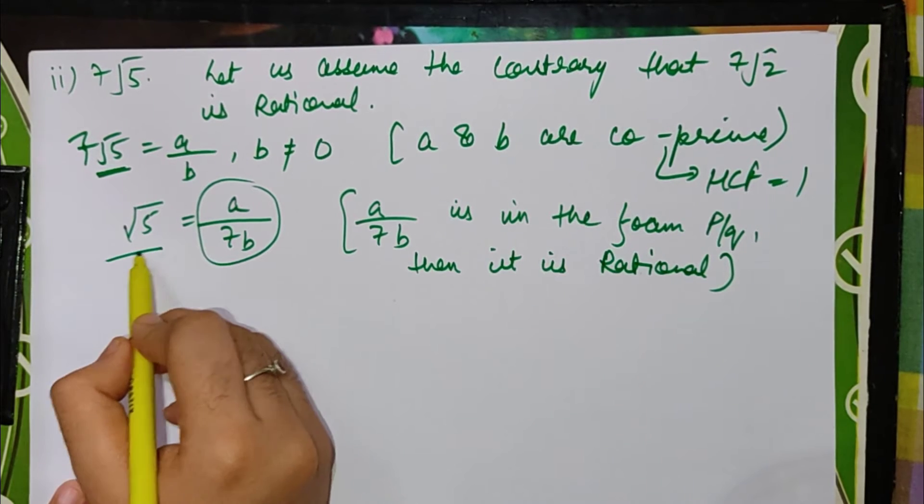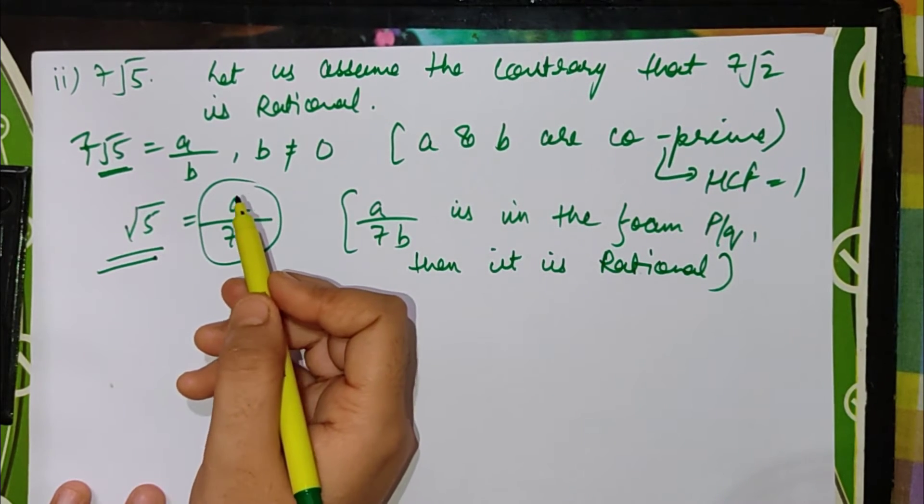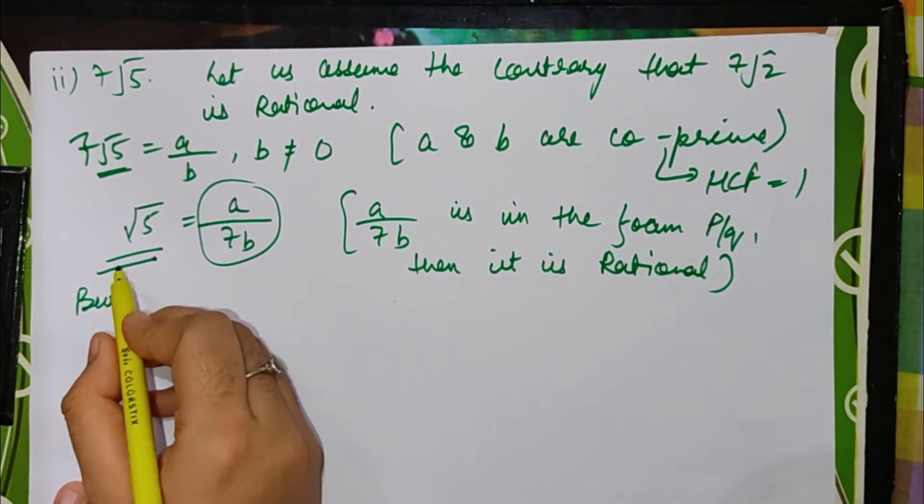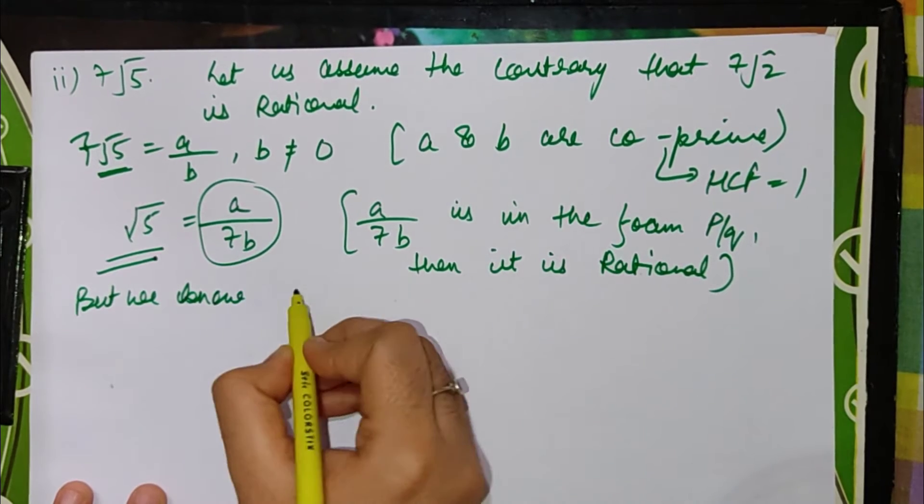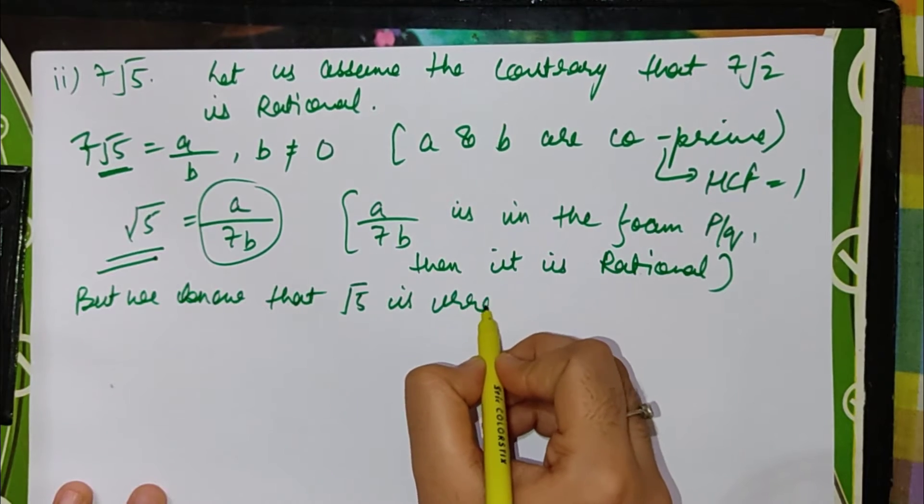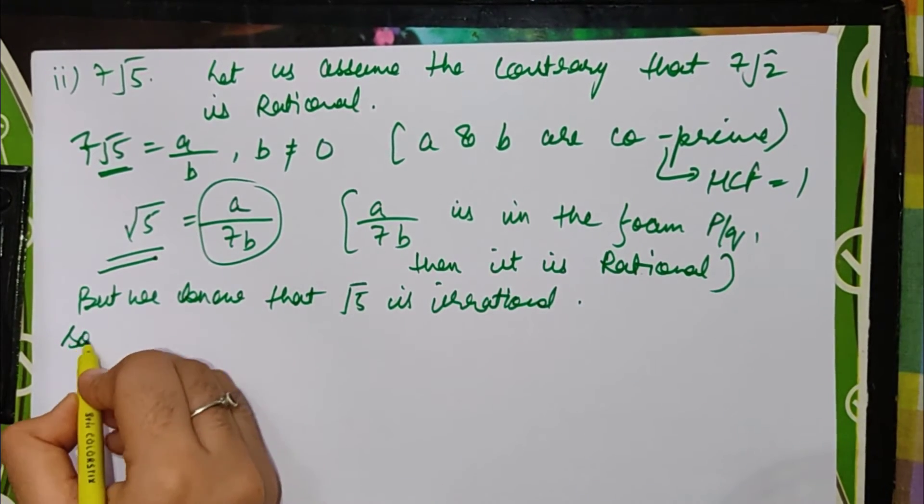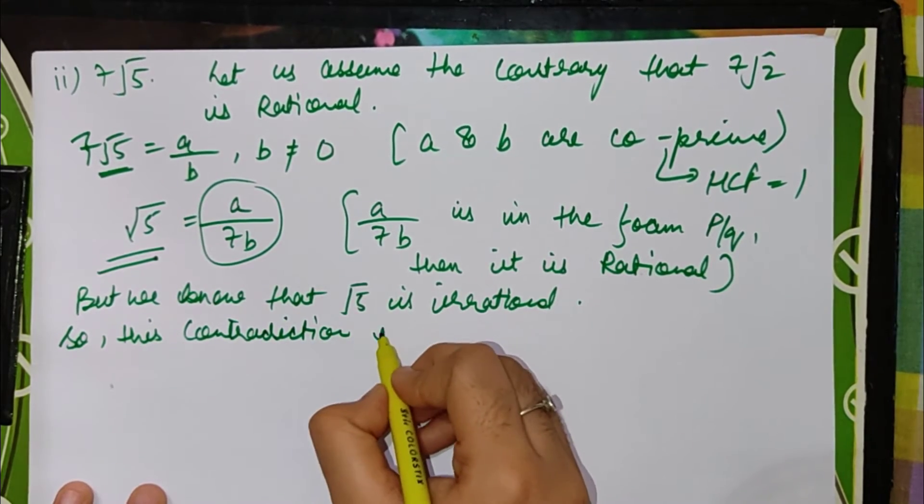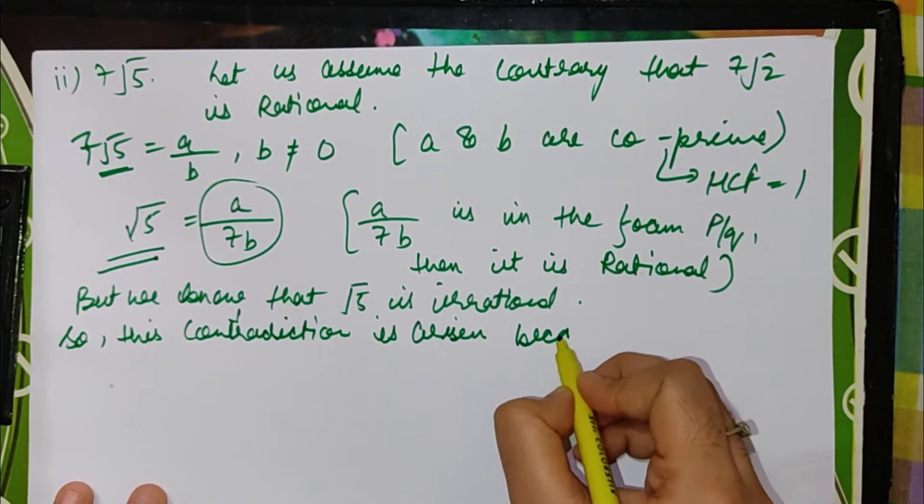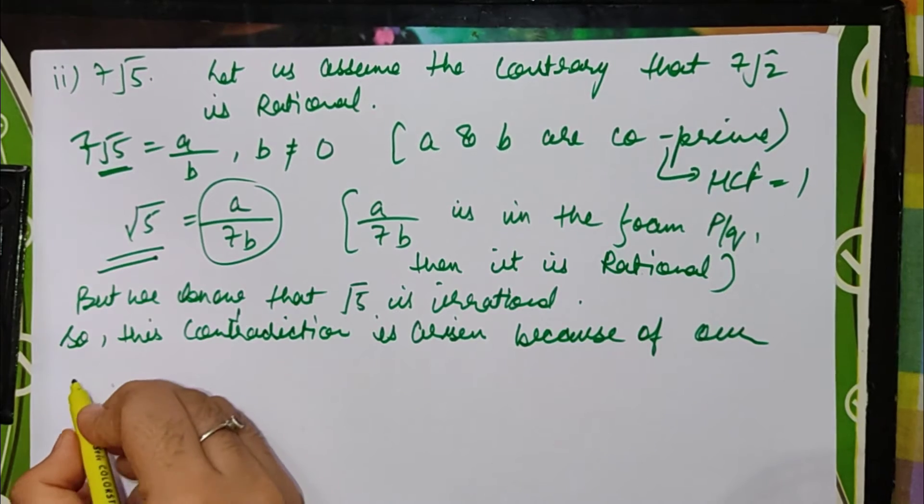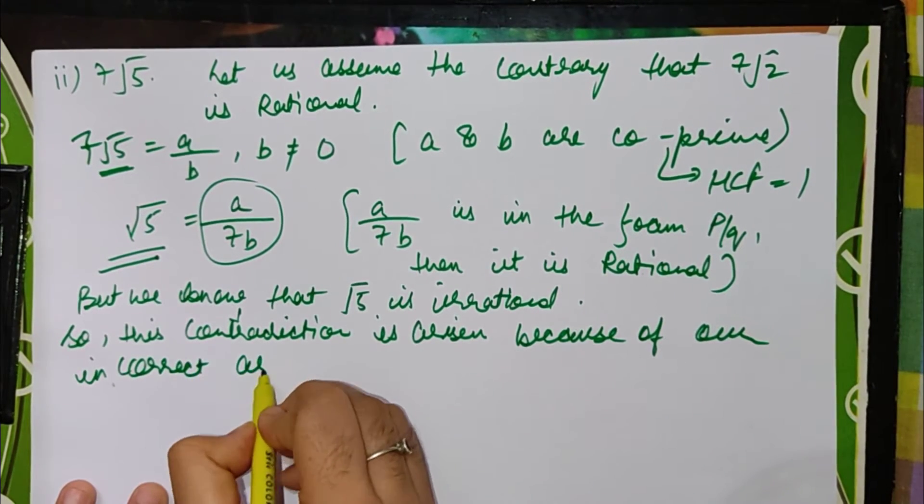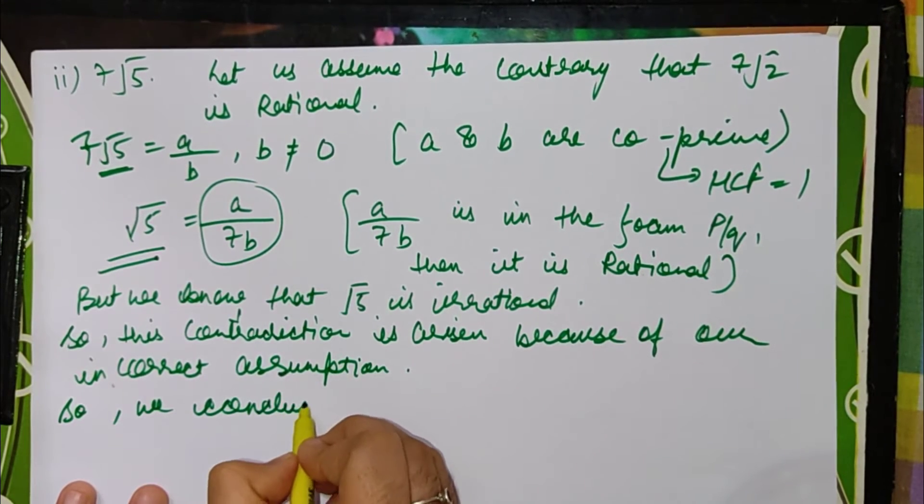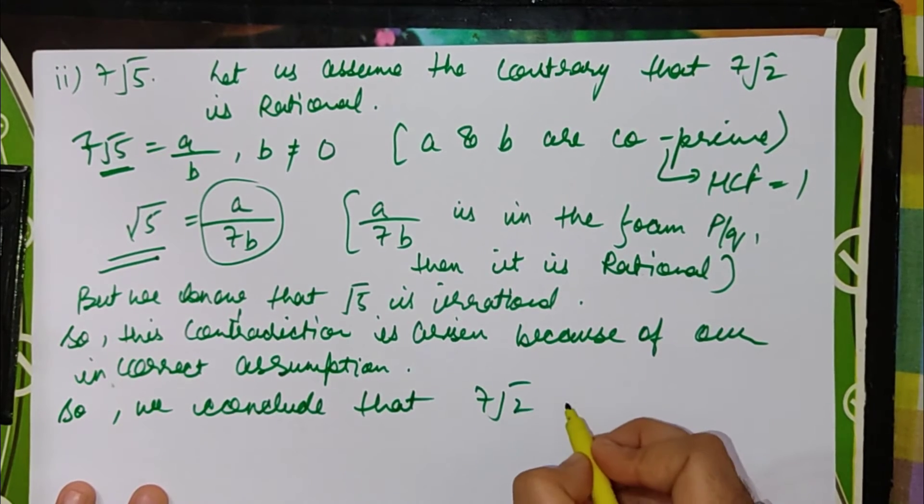But the previous question was that we had irrational proof under root 5. In the exam time you have to solve it completely. But we know that root 5 is irrational. So we can say that this contradiction is arisen because of our incorrect assumption. So we conclude that 7 root 5 is irrational. Third point, the third part is 6 plus root 5.